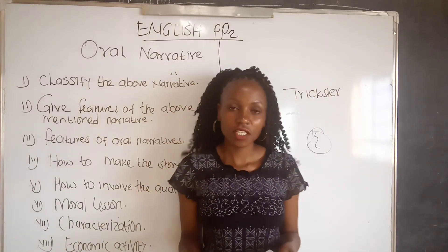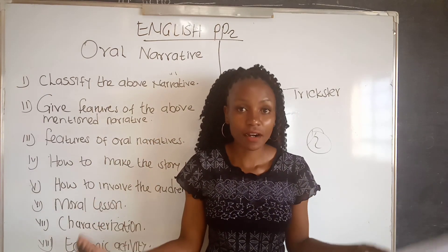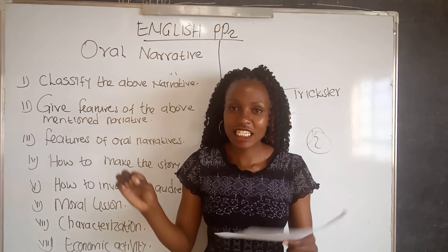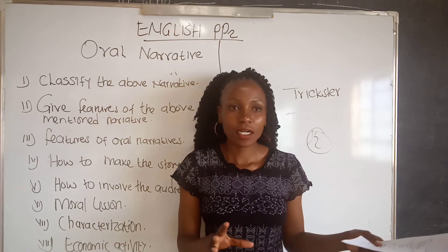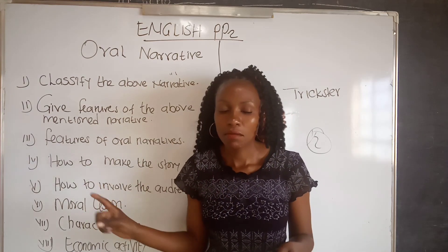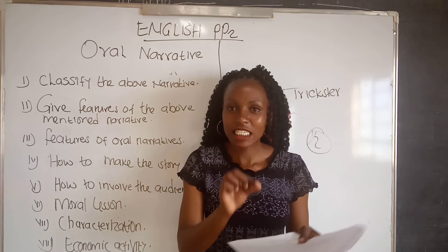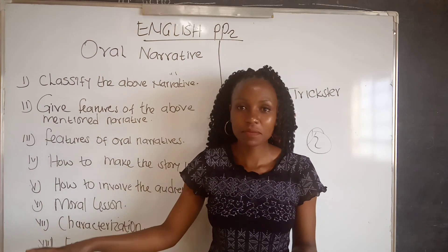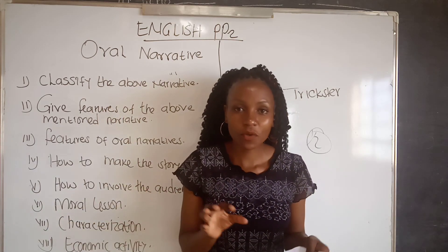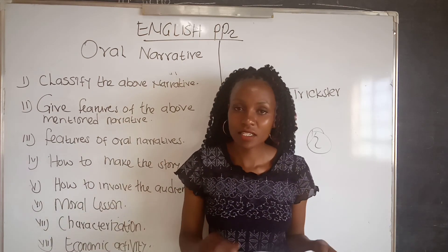You also have the question on economic activity. When asked to identify one economic activity of the people or community in the narrative, you must identify the activity itself — not the profession. For example, if crops are mentioned, the activity is farming. Saying 'they are farmers' is not an economic activity. Instead: 'the economic activity is farming because they grow yams,' or 'gathering because they are gathering fruits,' or 'trade because they exchange goods.'